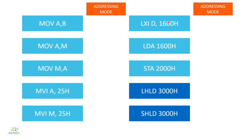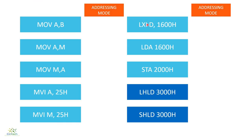Now let's see what addressing modes are. Addressing mode is one aspect that specifies the way the microprocessor gets to know where the operand is. It may be within a register or in a memory location, and that memory location can be specified in the instruction itself in several ways. Depending on the various ways, there are four to five kinds of addressing modes: register mode, immediate mode, direct and indirect mode, and the not-so-popular implicit mode of addressing.